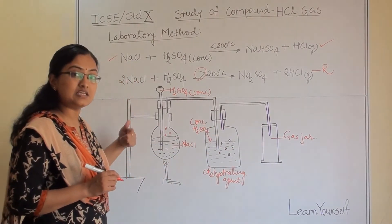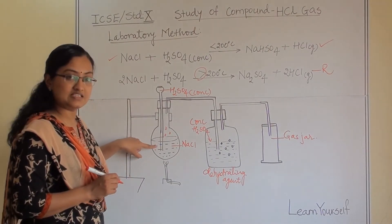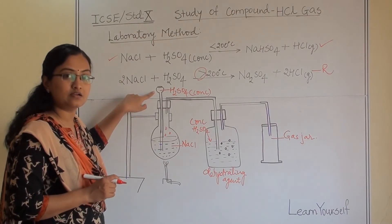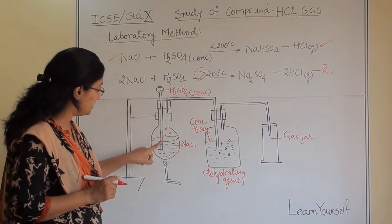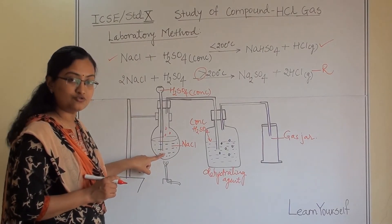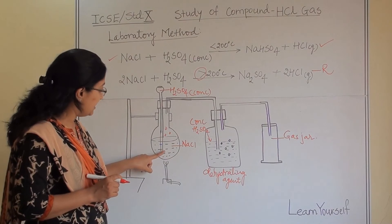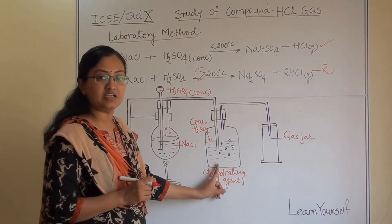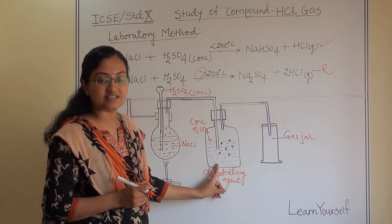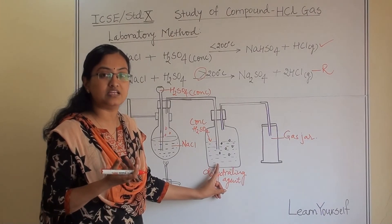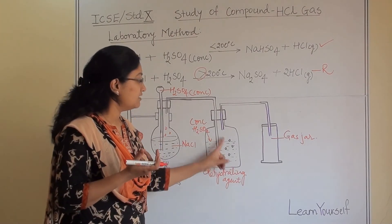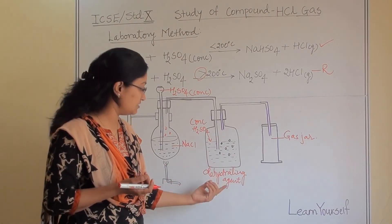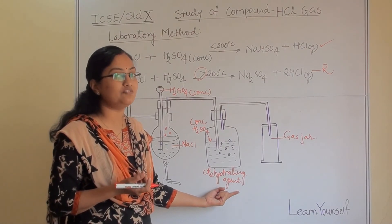So there is a three-step procedure and at the third step we get our dry hydrogen chloride gas. Let us see it again: NaCl solution is in the flask, and we are dropwise adding sulfuric acid from the thistle funnel into the NaCl solution. This generates HCl gas, which goes to a bottle containing concentrated sulfuric acid, because all the moisture in the gas is absorbed by the H₂SO₄ acting as a dehydrating agent.